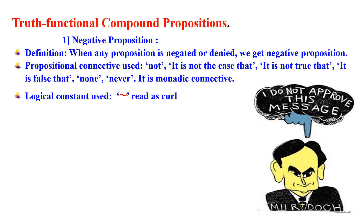One component. The logical constant used here is curl. The sign of curl is read as 'curl.' The symbolic form will be curl P, where curl stands for the connectives like not, it is not the case that, it is not true that, it is false that, none, never, etc. Whereas P stands for the component part.